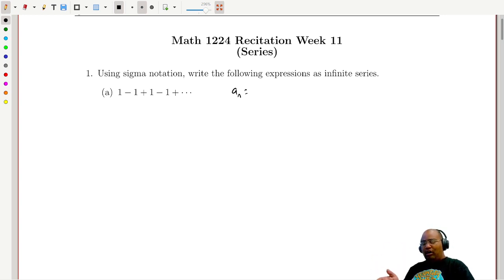And when the index is odd, we have a plus sign, when the index is even, we have a minus. So we can deduce that the general rule for the corresponding sequence here is minus 1 to the n minus 1.